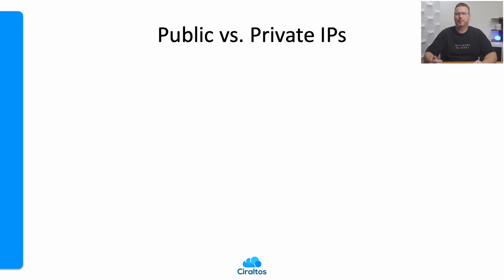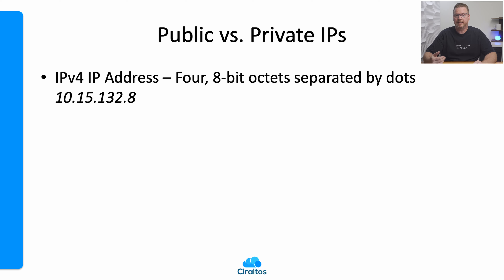Let's start with what an IP address is. It's a group of four 8-bit numbers separated by dots. Each group is called an octet. Those 8-bit octets will become important later.